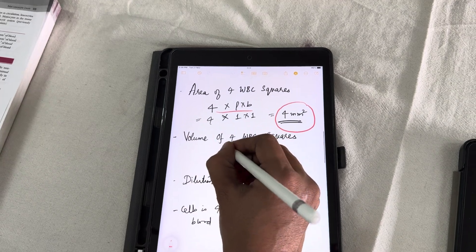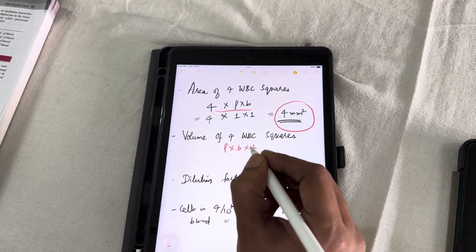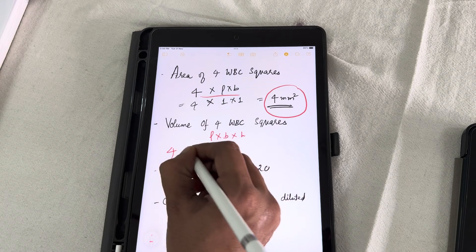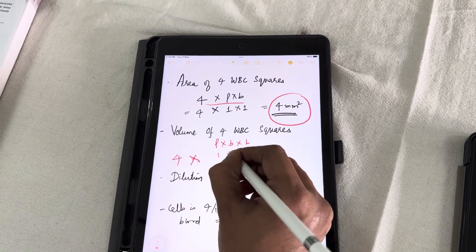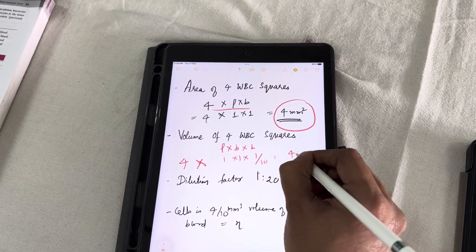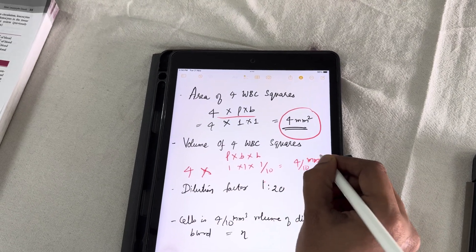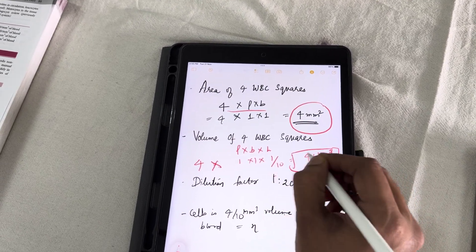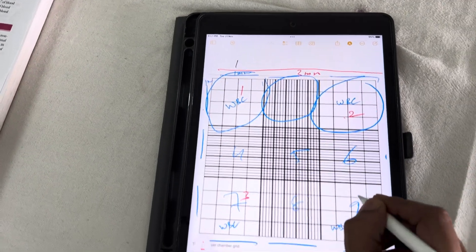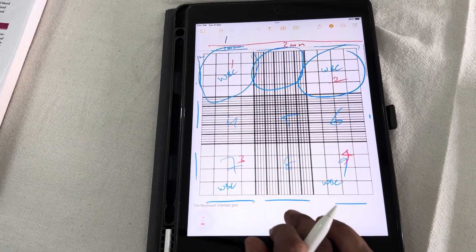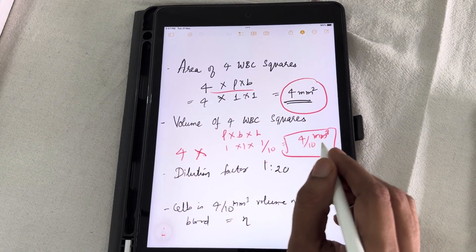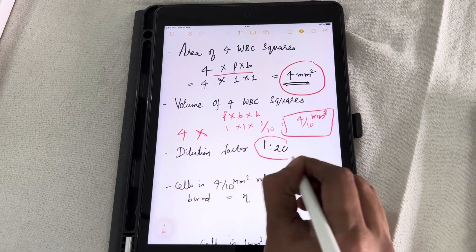Now, let us consider the volume. For the volume the formula is length into breadth into height. The 4 WBC squares we have 4 into length is again 1 into 1 and height is around 1 by 10 millimeter. So, it is around 4 by 10 cubic millimeter. This is the volume of 4 WBC squares. That means this square, this 1 square, this 2 square, this 3 square, this 4 square. Totally 4 peripheral squares total volume is around 4 by 10 cubic millimeter. In this volume how many WBCs are there ultimately we have to see. But before that something known as dilution factor.